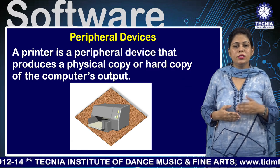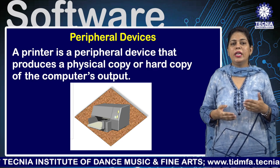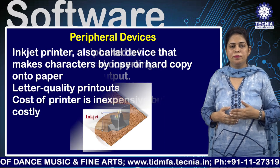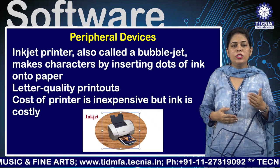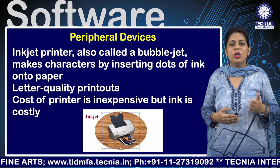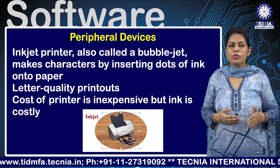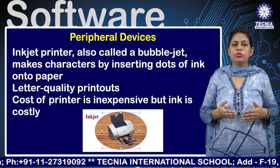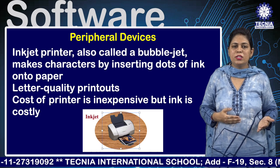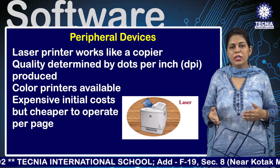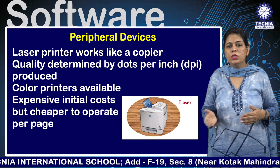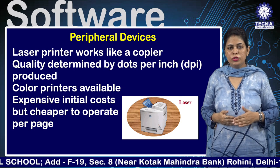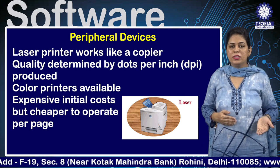An inkjet printer, also called a bubble jet, makes characters by inserting dots of ink onto paper, producing letter-quality printouts. The cost of the printer is inexpensive but ink is costly. A laser printer works like a photocopier; quality is determined by dots per inch (DPI). Color laser printers are available but initially expensive, though cheaper to operate per page.